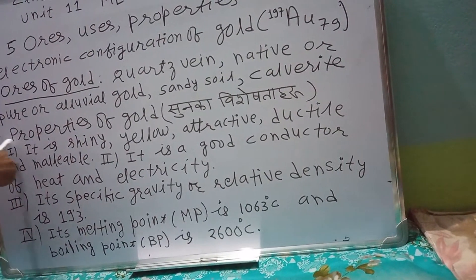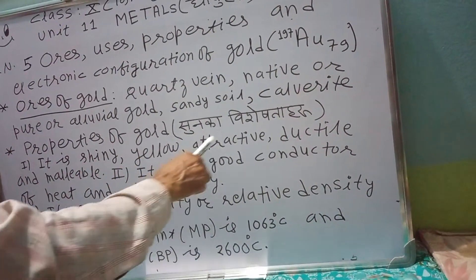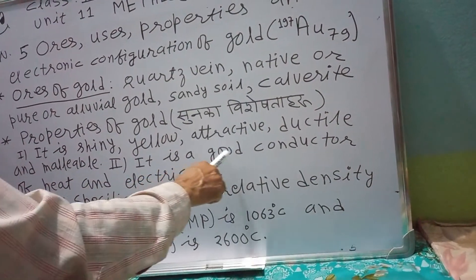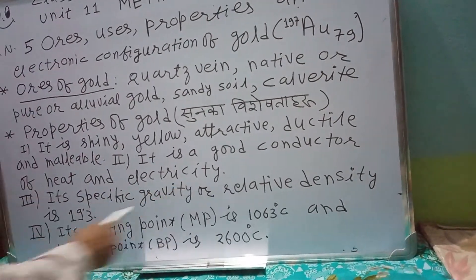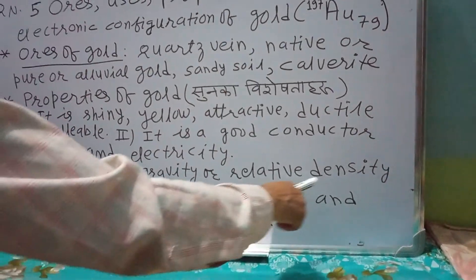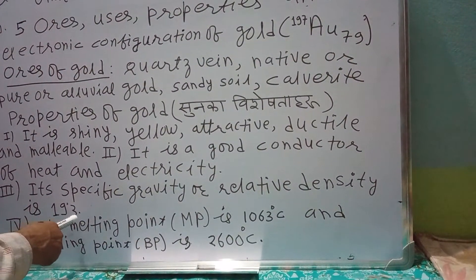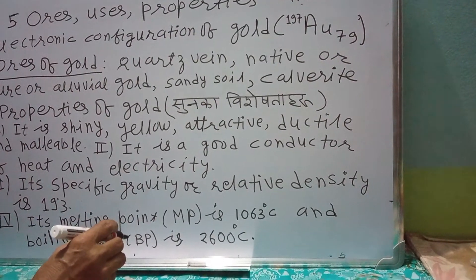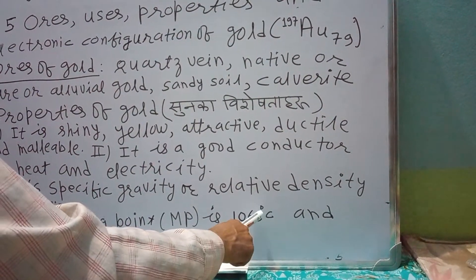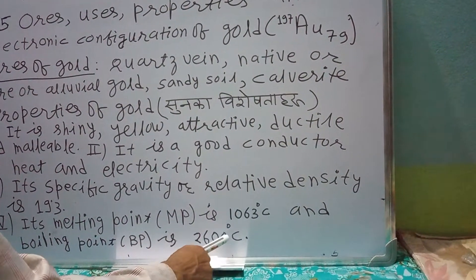Properties of gold: Number 1, it is shiny, yellow, attractive, ductile and malleable. It is hard also. It is a good conductor of heat and electricity. Number 3, its specific gravity or relative density is 19.3. It means gold is 19.3 times heavier than pure water at 4 degree Celsius. Number 4, its melting point is 1063 degree Celsius and its boiling point is 2600 degree Celsius.